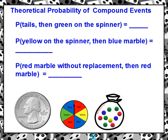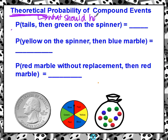Today we're going to talk about theoretical probability of compound events. The last video you probably watched was theoretical probability of simple events. This one's a tad different. We're still working with theoretical probability. Theoretical means what should happen — we're talking about what should happen. We haven't done an experiment yet, we don't have any data. We are technically just working with what should happen if we do this experiment.